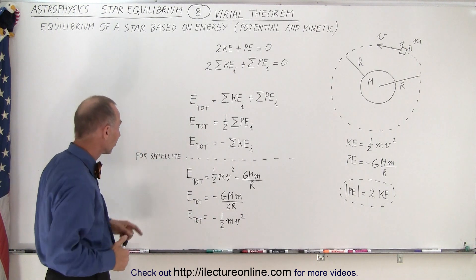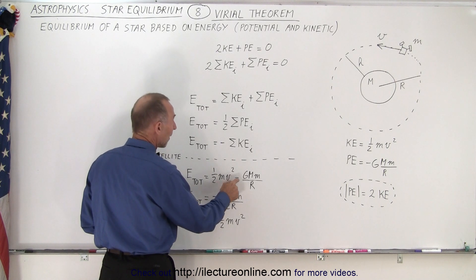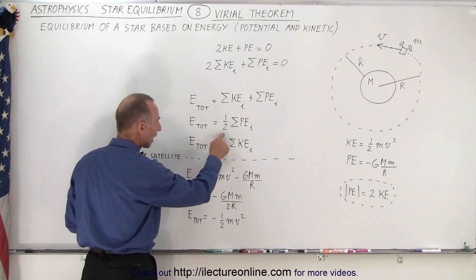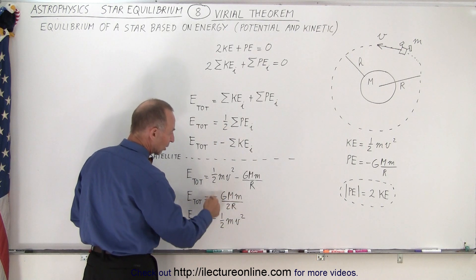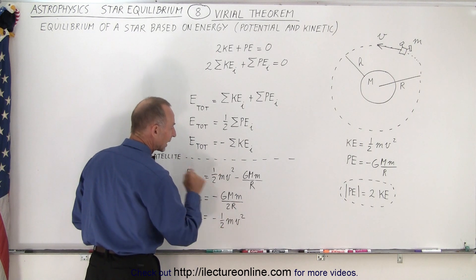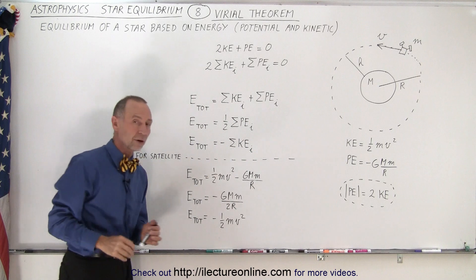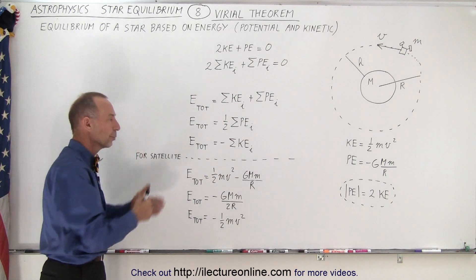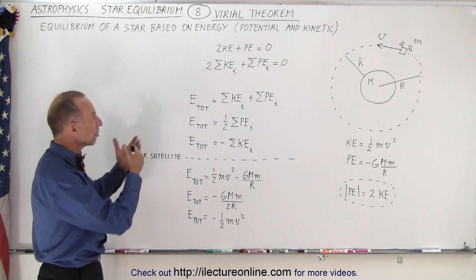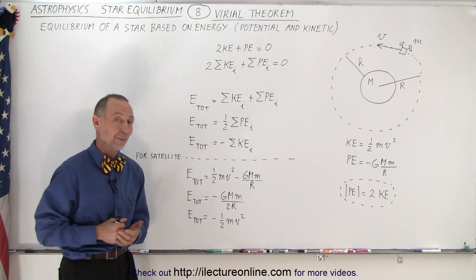Comparing to the satellite, the total energy can be expressed as the kinetic energy plus the potential energy, which is negative. We can also express it as half the potential energy, or as the negative of all the kinetic energy. This is how we express these three forms for a satellite, and for a star you use the exact same format but sum up all the individual components within the star. That is looking at the star from an energy perspective rather than a structural pressure, force, and gravity perspective — and that is what we mean by the Virial Theorem.